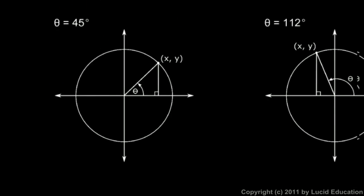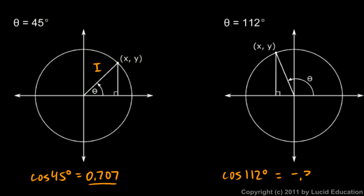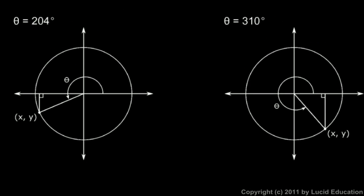Let's look at some examples. For 45 degrees, the cosine of 45 degrees is 0.707, or the square root of 2 over 2 — positive in quadrant 1. At 112 degrees, the cosine of 112 degrees is negative 0.375. That's the x-coordinate in quadrant 2, and you can see it has to be negative there. Rotating around to 204 degrees puts us in quadrant 3, and the cosine of 204 degrees is negative 0.914. That length is 0.914, but it's to the left, so the x-value is negative 0.914.